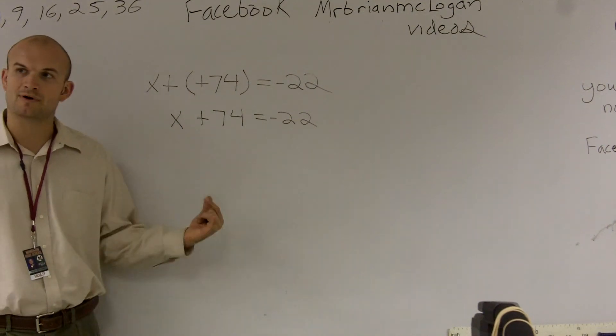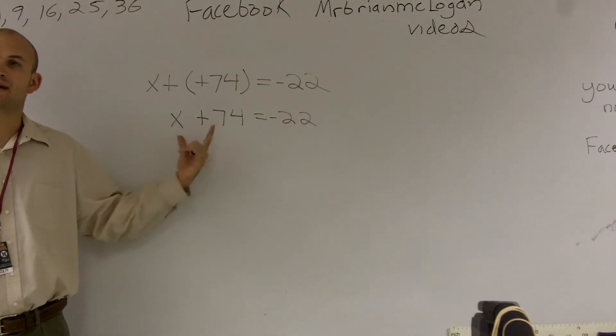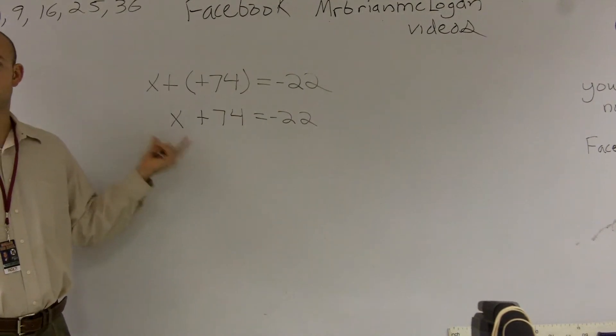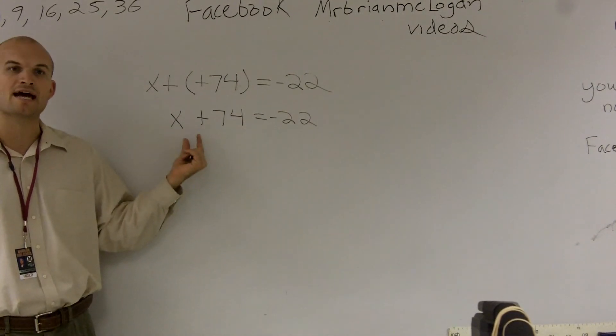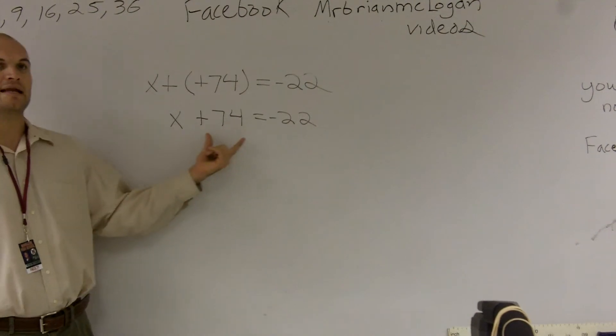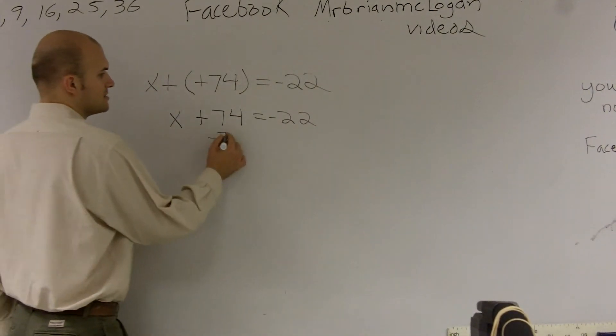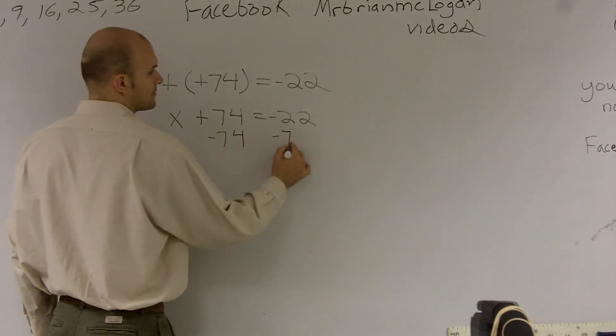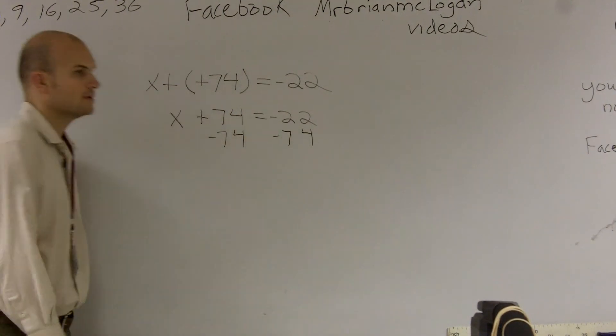Now, using my inverse operations, I have to undo whatever's happening to my variable. So I see my variable, because remember, my x is what I'm solving for. So I'm going to undo what's happening to it. So if it's being added by 74, I'm now going to subtract 74. And whatever you do on one side, you have to do on the other.